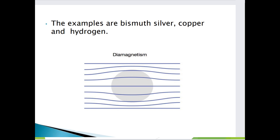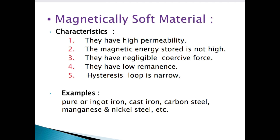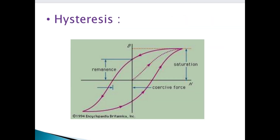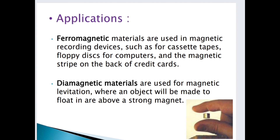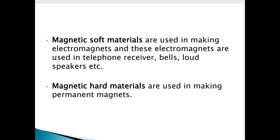Diamagnetism means it has a weak magnetic dipole moment, and it is also in the opposite direction to the externally applied force — the magnetic field creates in opposite direction. This is our diamagnetism. Next are magnetically soft materials and magnetically hard materials, their characteristics, hysteresis loop, and applications. We will see these in the next video. Thank you.